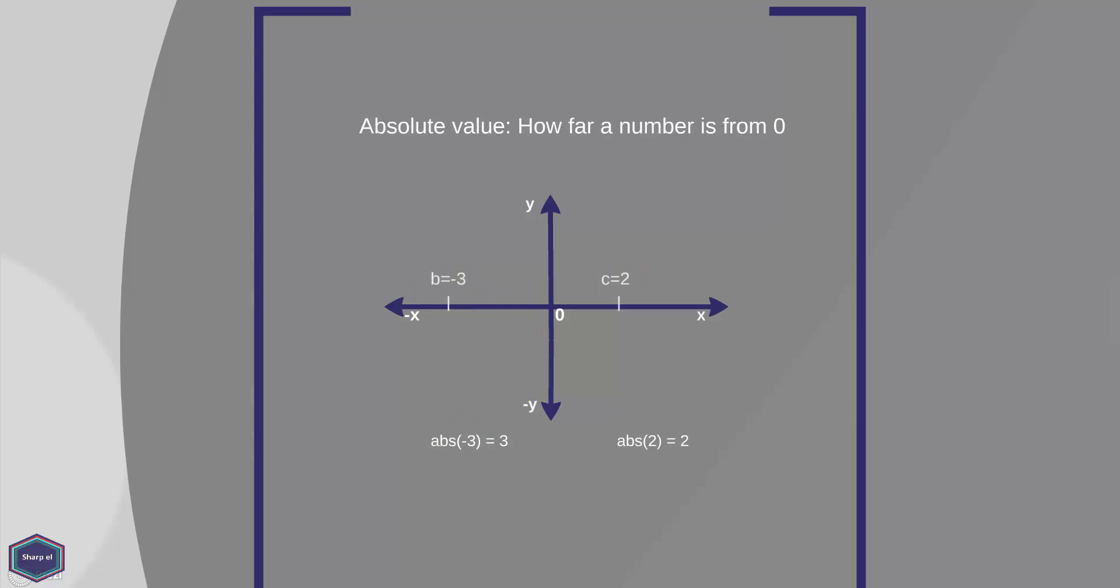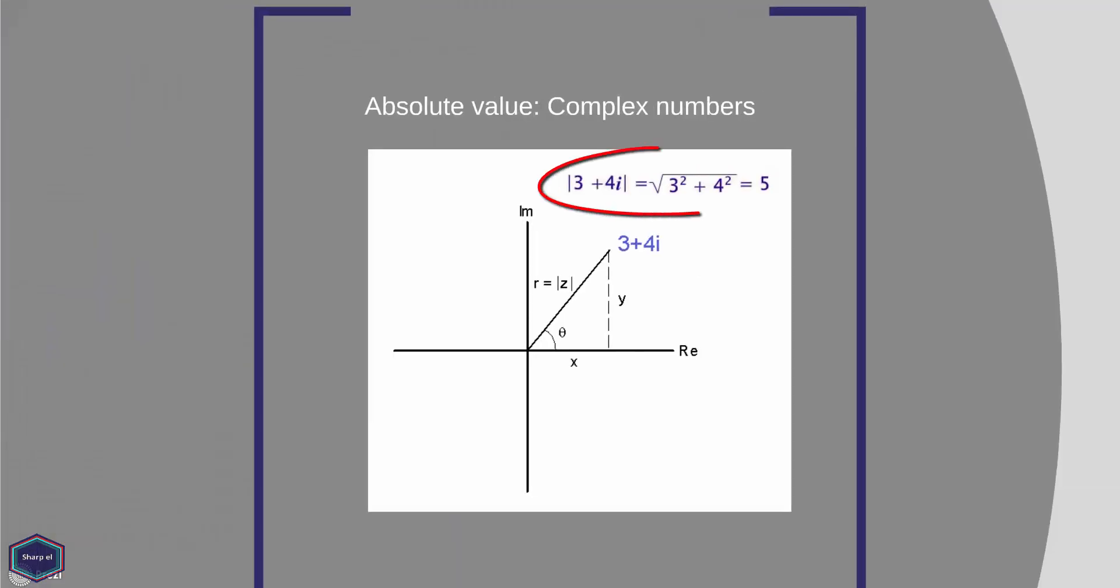To calculate the absolute value of a complex number, you square the real and imaginary parts, add them and take the square root. As you can see in our example, it is the distance from origin. In our case, we have calculated the absolute value to 5.